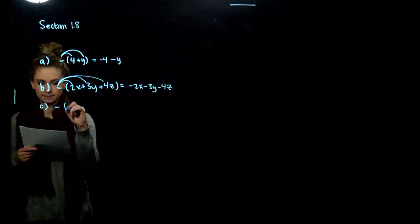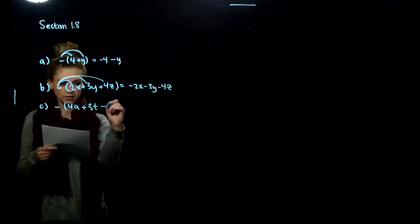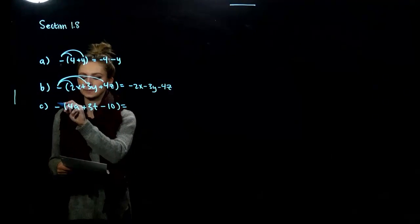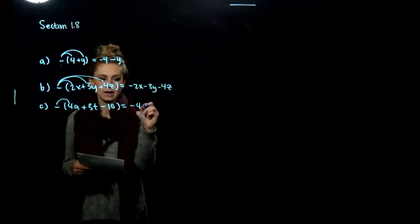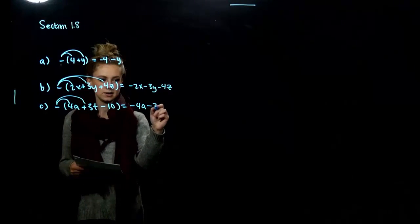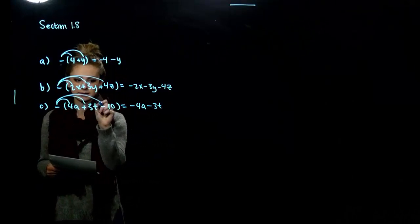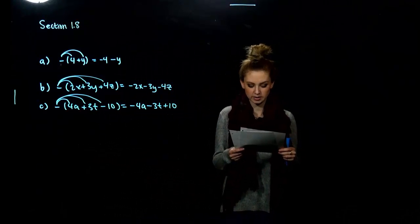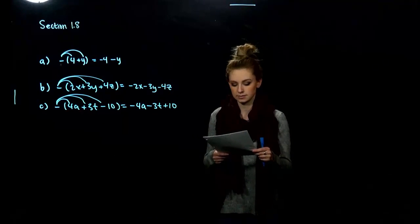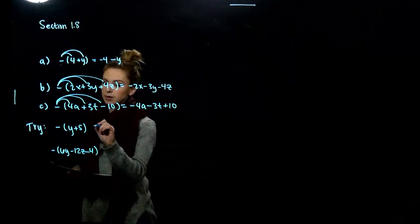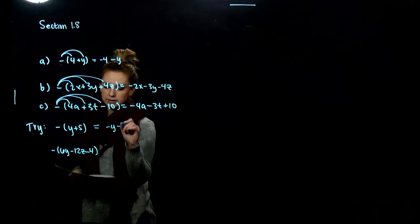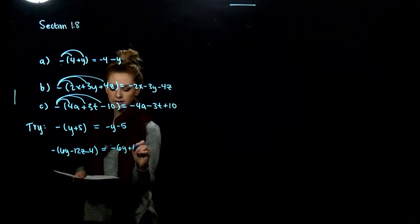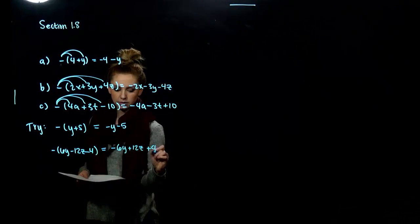Lastly, we could have another mix of variables, but in this case I have a negative on the inside, so I have to be careful. We get negative 4a, negative 3t, and positive 10. Take those two tries — find an equivalent expression without parentheses. When you distribute a negative, all signs change; it's just a negative 1, so all signs on the inside are going to change.